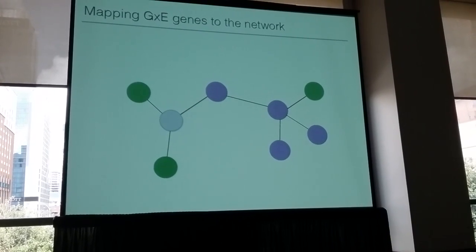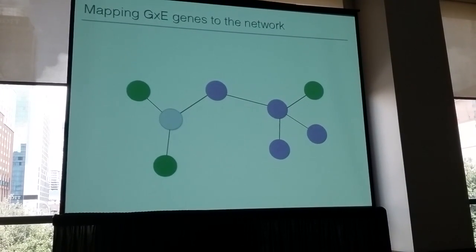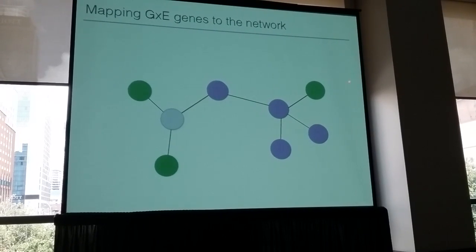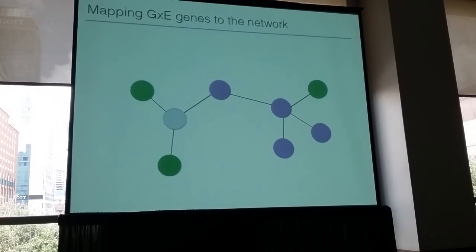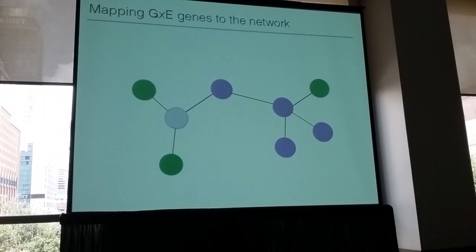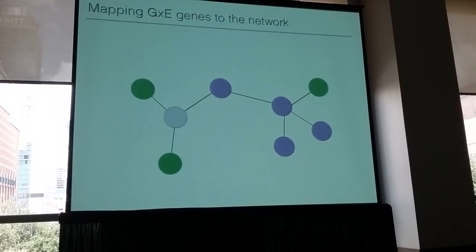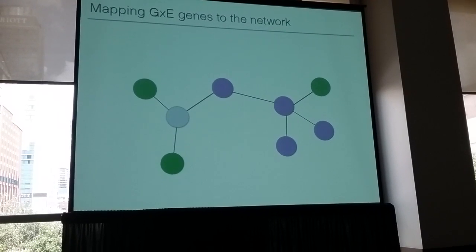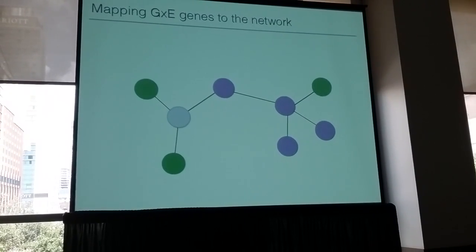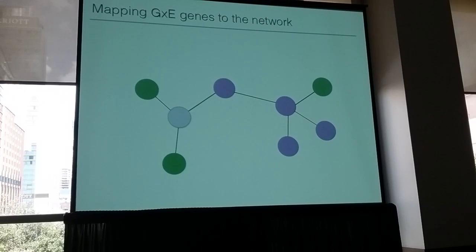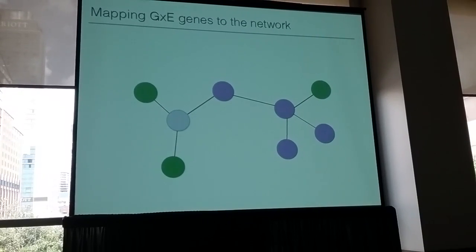We'll end up with genes that didn't show any G×E effect in either treatment, some genes that showed only a response in the cold case, and some genes that showed a response in the drought case. We ask whether these genes differ in terms of how they're sitting in the network. Do they fall randomly in this gene interaction network? Are the cold genes just picking genes at random with respect to their position? Are the drought genes doing that? And if they're not, are they doing it non-randomly in the same way — sitting in very tight modules or spread out throughout the genome?